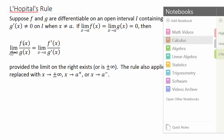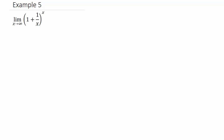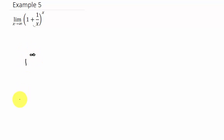Let's look at this example. As X goes to infinity, the term 1 over X goes to 0 because X is getting really big, so that fraction goes to 0. So 1 plus 0 is 1, and X is going to infinity. So we have 1 raised to the infinity, and that's an indeterminate form.